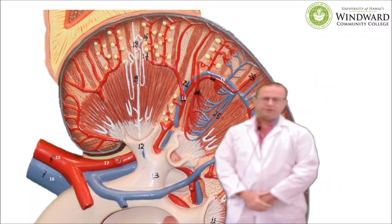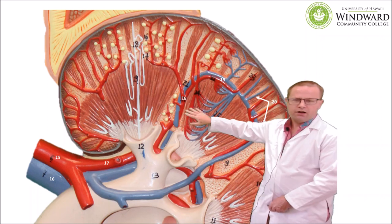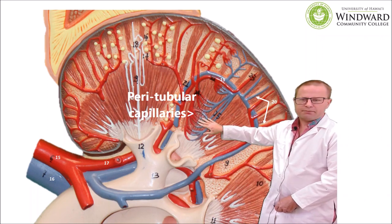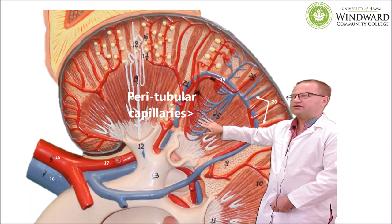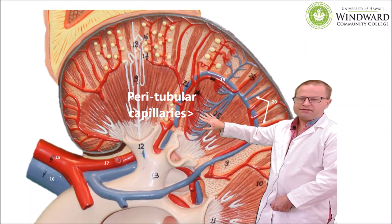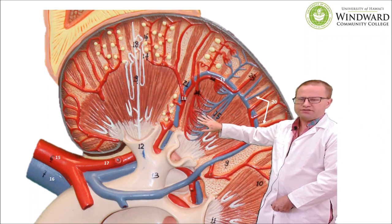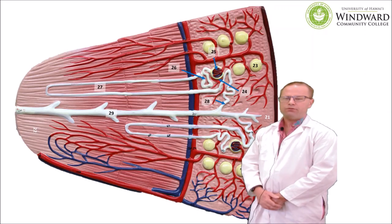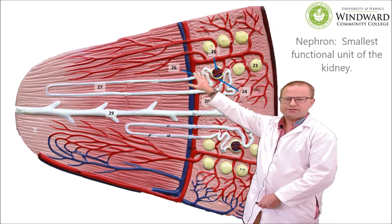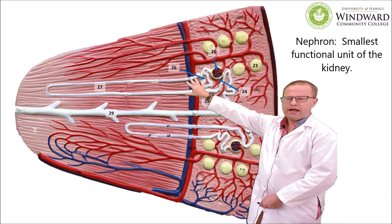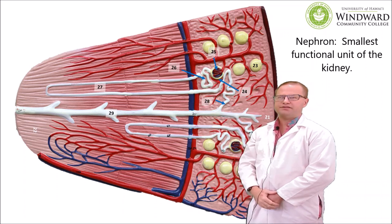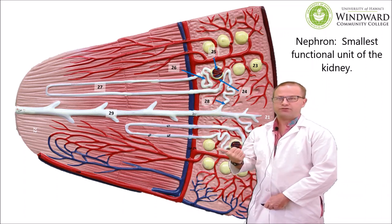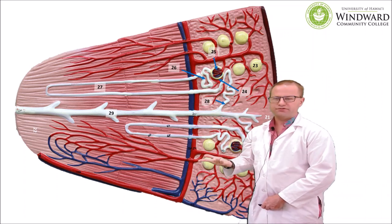Another type of blood vessel to point out are the peritubular capillaries. Remember, capillaries are very leaky blood vessels, and this is a primary site where reabsorption is going to happen. Now that we've had an overview of the kidney anatomy, we're going to take a look at the functional units of the kidney, which are called nephrons. The nephrons are responsible for the three major processes that the kidneys perform: filtration, secretion, and reabsorption.